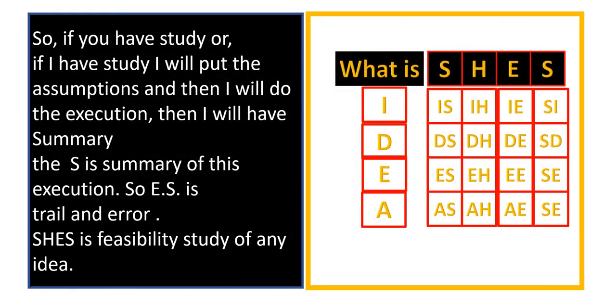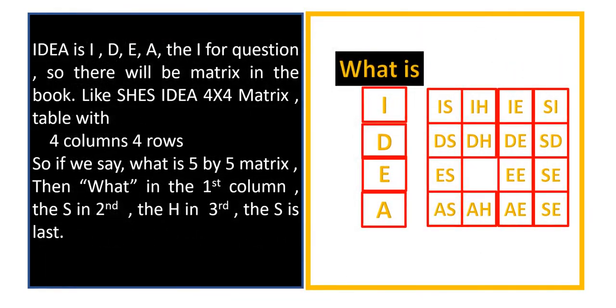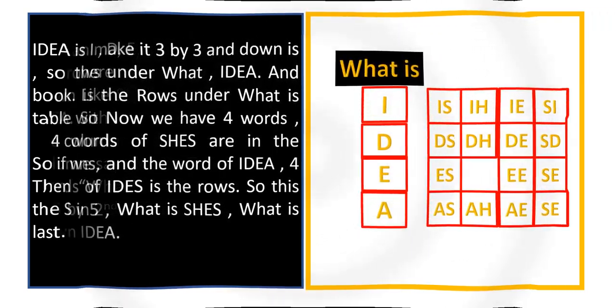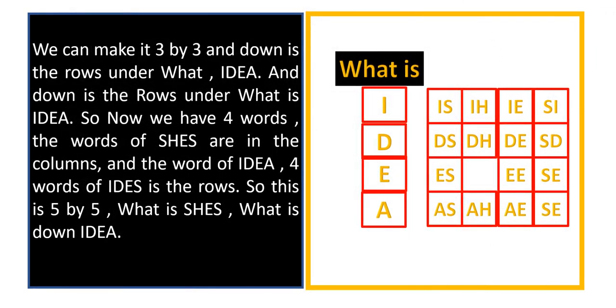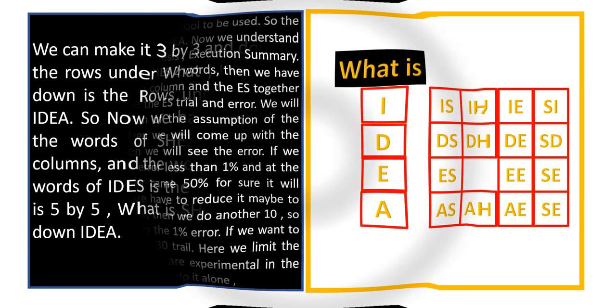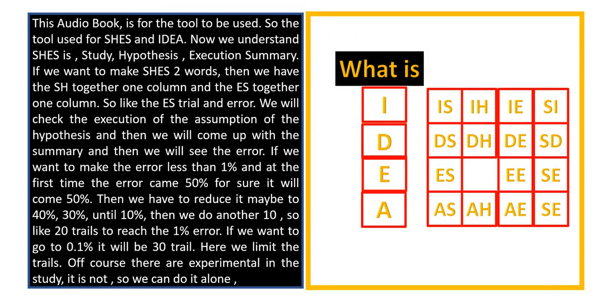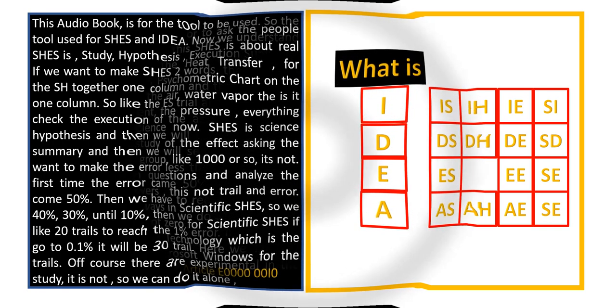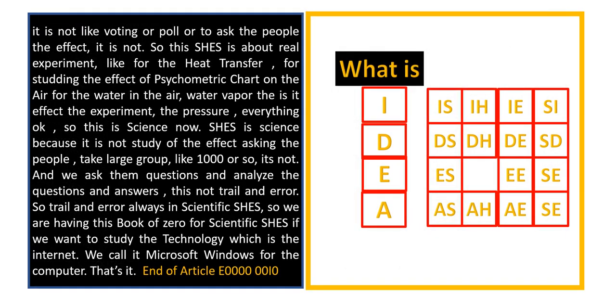So this is article one in my book, but I don't use the number one. So article two, which is the name of the article. End of article E zero zero zero zero, then zero zero one zero, it means two. That's it, three two one one three.